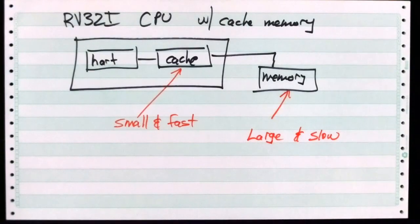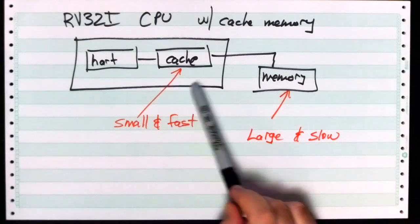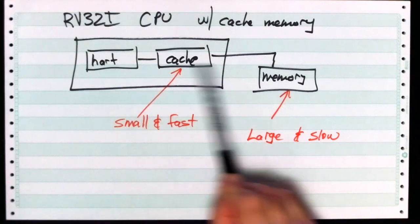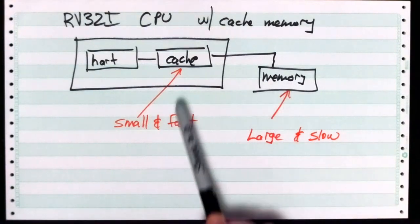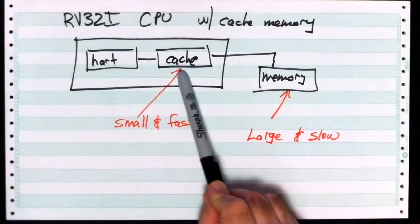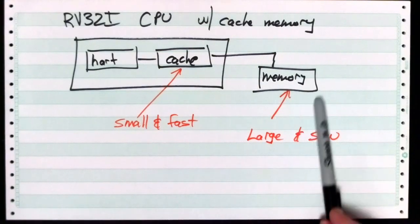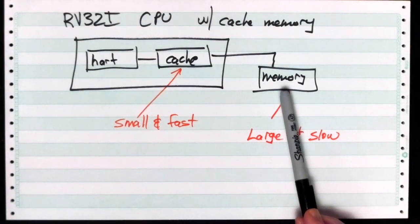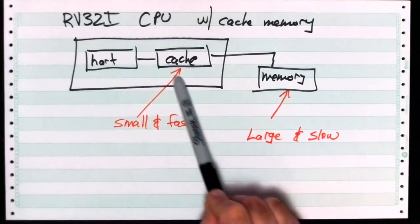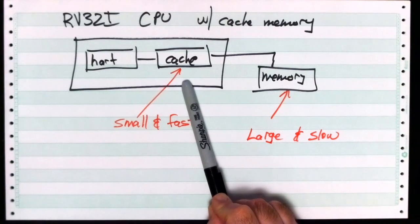So let's look at the same thing again, but we're going to add a cache to it. Where does it go? It goes between the hardware thread and the memory. This is going to be small and fast, relatively speaking, to the large and slow main memory. The main memory could be gigabytes; the cache is on the order of megabytes in a realistic system.